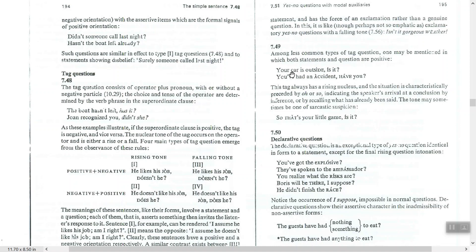In another type of tag question, both the statement and the tag question are positive — there is no negative-positive contrast. For example: 'Your car is outside, is it?' and 'You've had an accident, have you?' This tag has a rising nuclear tone, and the situation is characteristically preceded by 'oh' or 'so', indicating the speaker's arrival at a conclusion by inference.